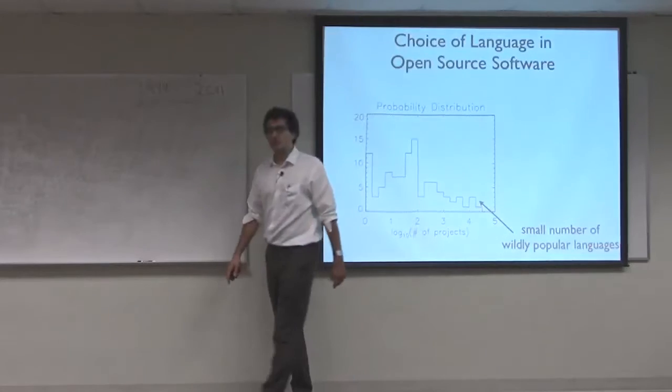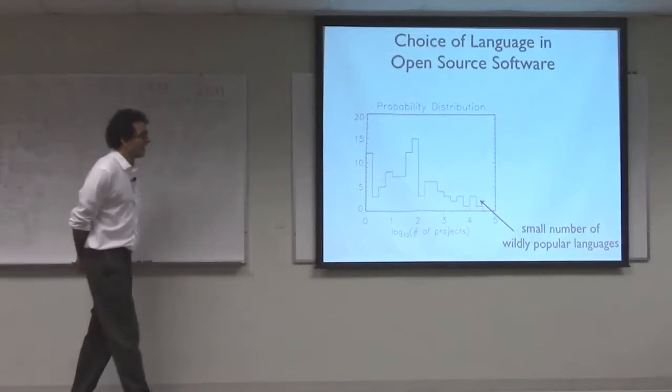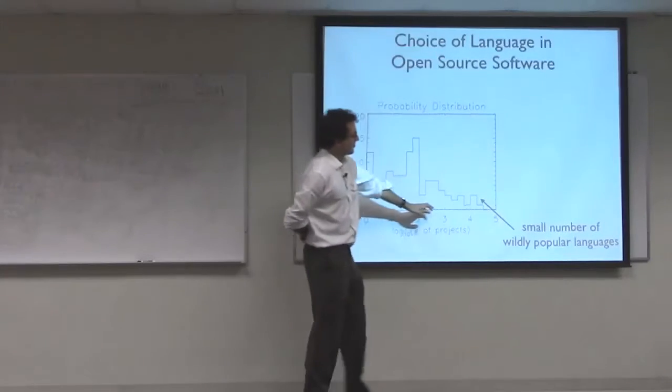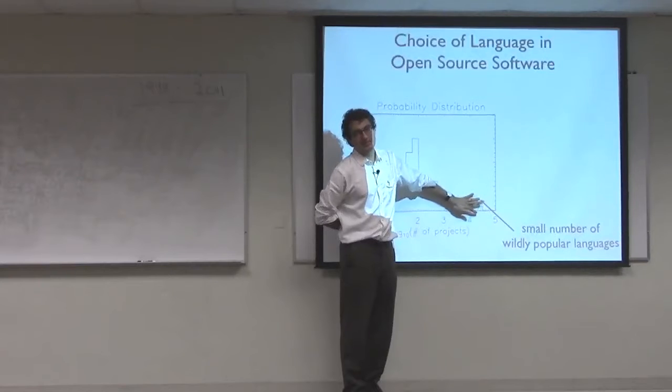These are sort of the most common languages that you find on SourceForge. They have a runaway popularity. And if you know anything about computer programming, it will not surprise you to learn that these are languages mostly derived from C, such as C, C++, Java.